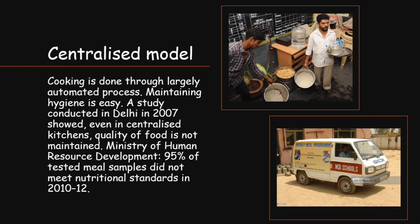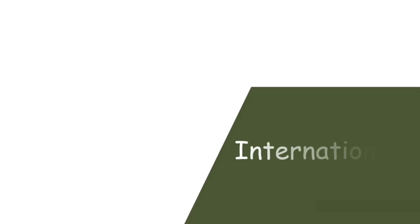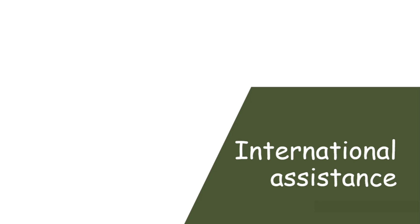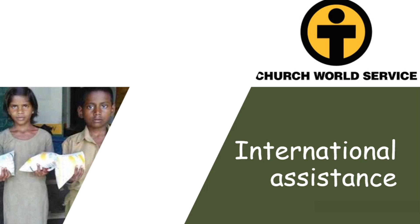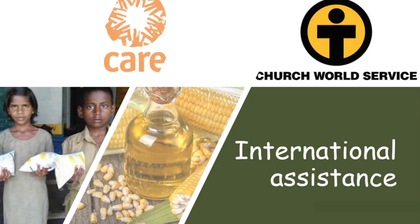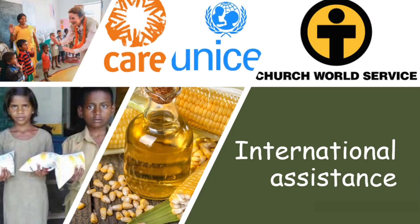International assistance is provided by different international voluntary and charity organizations. For example, Church World Service provided milk powder to Delhi and Madras Municipal Corporation; CARE provided corn soya meal, bulgur wheat, and vegetable oils; and UNICEF provided high-protein foods and educational support.